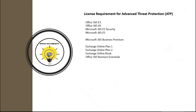Microsoft Defender for Office 365 Plan 2 is included in Office 365 E5, Microsoft 365 E5 Security, and Microsoft 365 E5. Microsoft Defender for Office 365 Plan 1 is included in the Microsoft 365 Business Premium license. Microsoft Defender Plan 1 and Plan 2 are also available as standalone licenses. If you have Exchange Online Plan 1, Exchange Online Plan 2, Kiosk license, or Office 365 Business Essentials, you can purchase Microsoft Defender Plan 1 or Plan 2 as a standalone license.